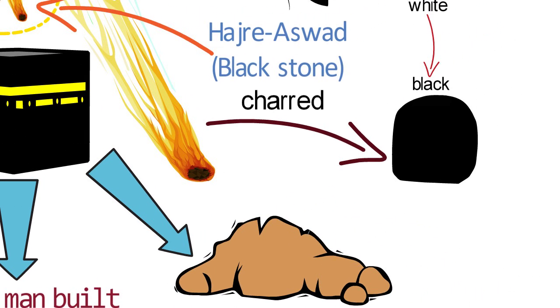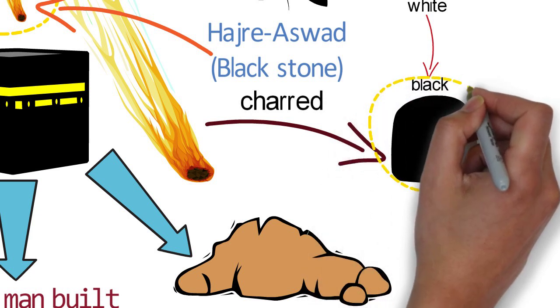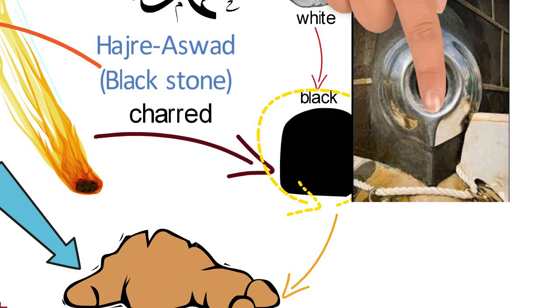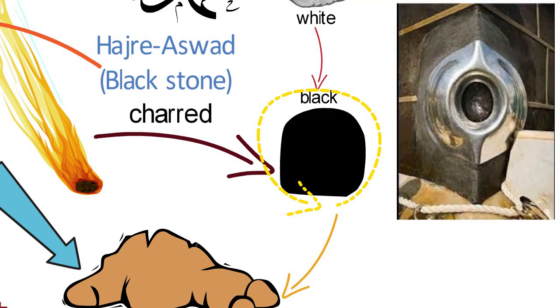So perhaps Hajre-Aswad is that stone which he first discovered as the oldest remnant of the Kaaba, and out of respect for the history of that stone, he put it in a very special place, and that is why it is so highly respected today.